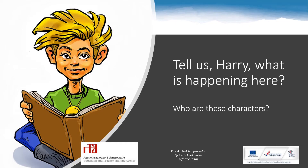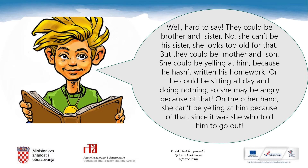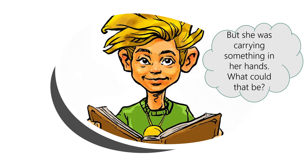So tell us, Harry, what is happening here? Who are these characters, and why is that woman yelling at that boy or man? Do you have any ideas who they are and what they are doing? Hard to say. They could be brother and sister. No, she can't be his sister — she looks too old for that. But they could be mother and son. She could be yelling at him because he hasn't written his homework, or he could be sitting all day doing nothing, so she may be angry because of that.